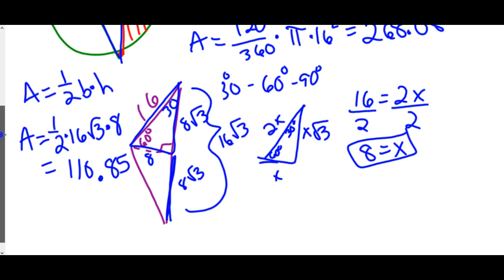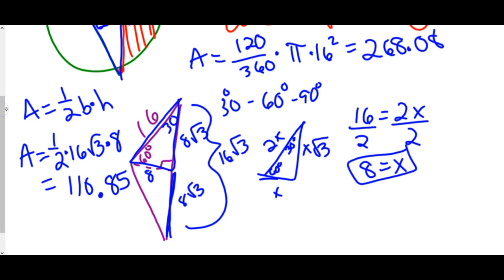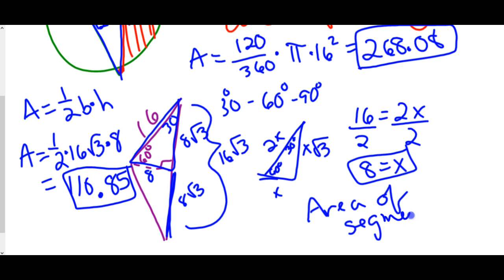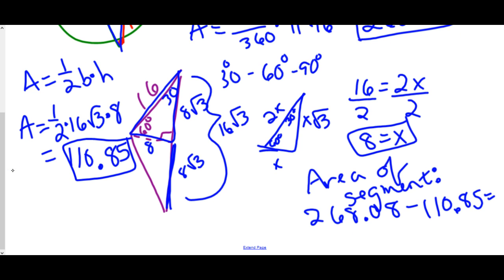Now we have these two numbers. We have the 268.08 and the 110.85. The area was those two numbers subtracted. So area of our segment is 268.08 minus 110.85, which gives us 157.23.